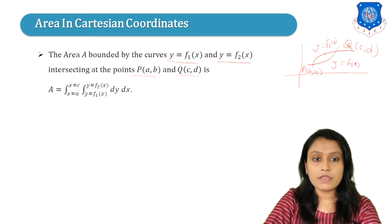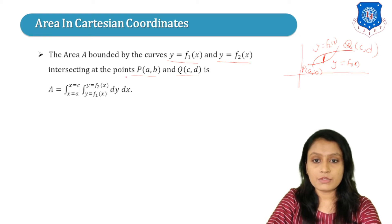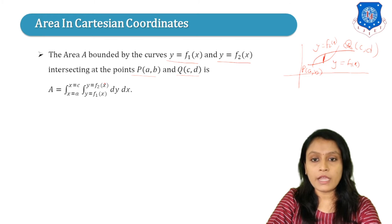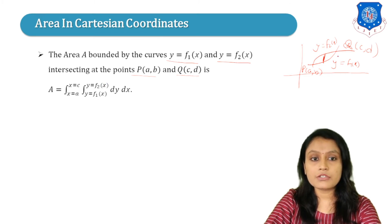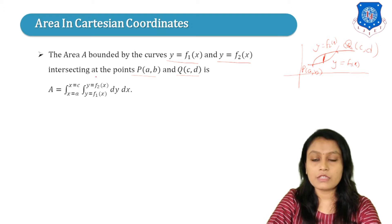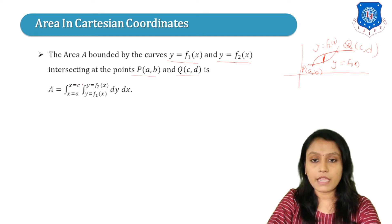Here we are making a vertical strip. The vertical strip starts from F1(X) and ends at F2(X), so the limits of Y are F1(X) to F2(X). When we move this strip, the X coordinate changes from A to C, so the limit of X is A to C.